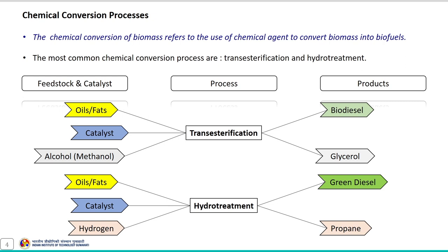Chemical conversion processes: the chemical conversion of the biomass refers to the use of a chemical agent to convert biomass into the biofuel. And from this schematic it appears that different conversion routes are available for the production of biodiesel and green diesel from various feedstock materials such as oils and fats.